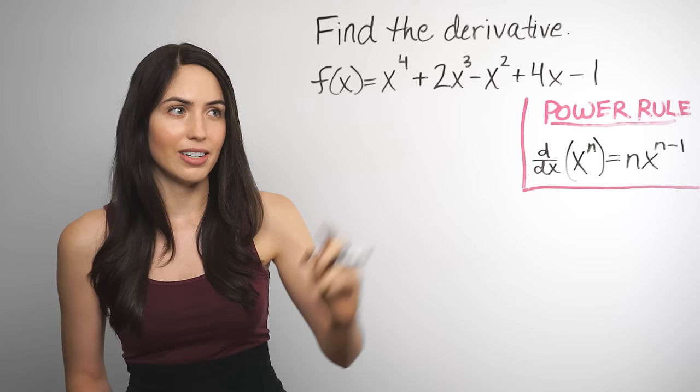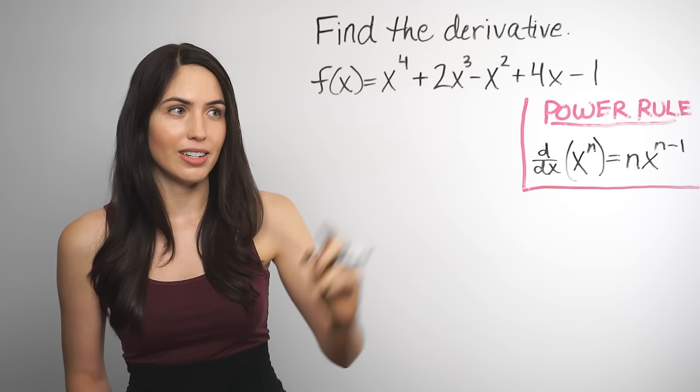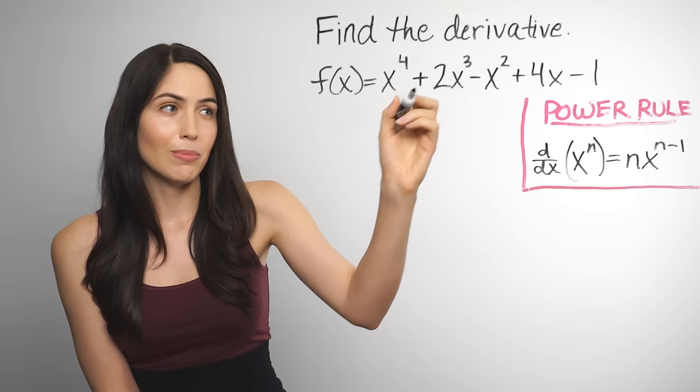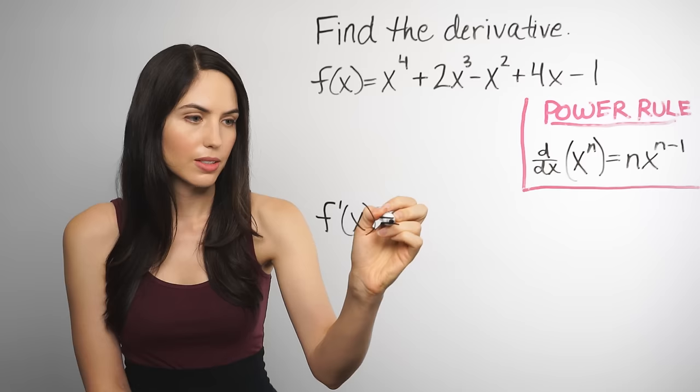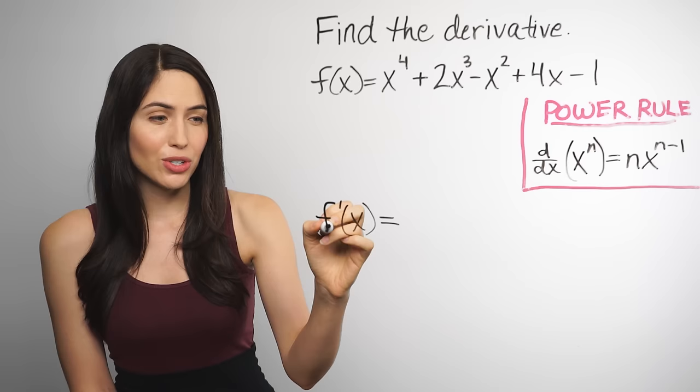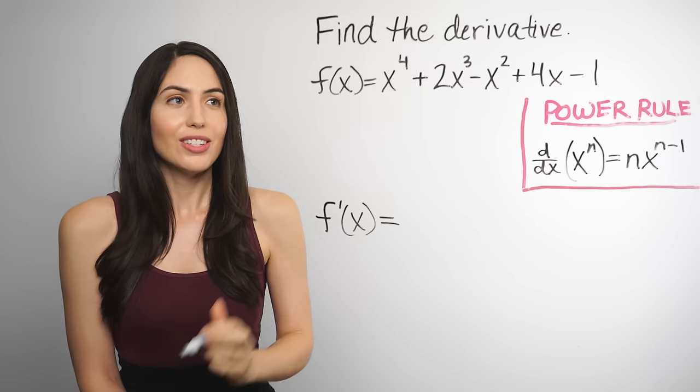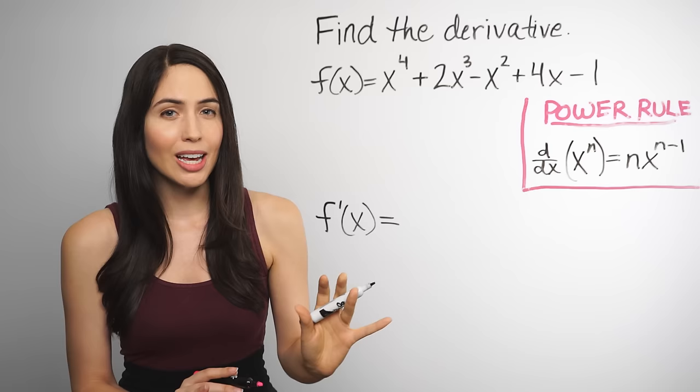Look at this polynomial. It has a bunch of terms added and subtracted. We can find the derivative of this by finding the derivative of each term individually, and that will give us the full derivative. So this is f prime of x — the prime notation for the derivative. This means the derivative of f of x. Let's look at the first term: x to the fourth power. This is a power of x, and any time you have a power of x, you can use the power rule.